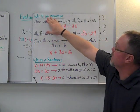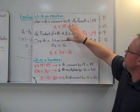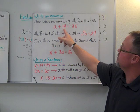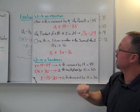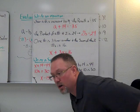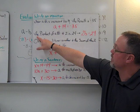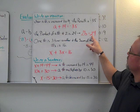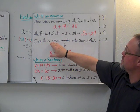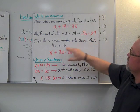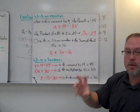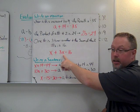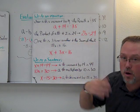Let's write some equations. 'When a number is increased by 14, the result is negative 35' gives us a variable plus 14 equals negative 35. 'The product of a number and 2 is 24' — product means multiplying — so 2 times b equals 24. 'One number is 3 times another, and the sum of the two is 16' is more complex: one variable is x, the other is 3x, and x plus 3x equals 16.